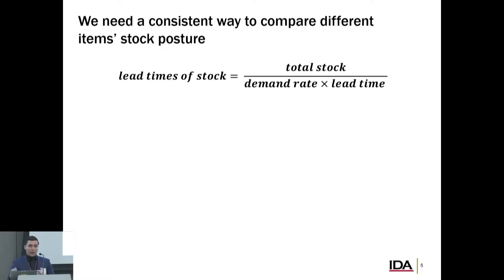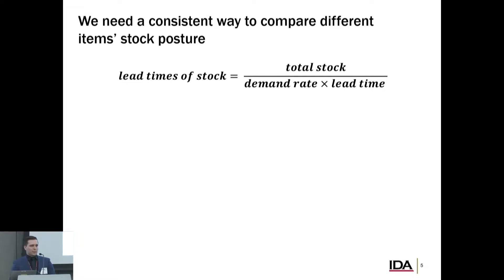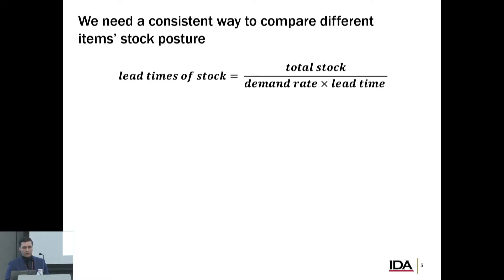We've come up with a rather simple metric we're calling 'Lead Times of Stock.' We might need different nomenclature because people think we're talking about lead times that go into the metric. We need a consistent way to compare the posture of different items within the entire infrastructure the DoD manages. Let's go through simple examples that lead to the two extremes.